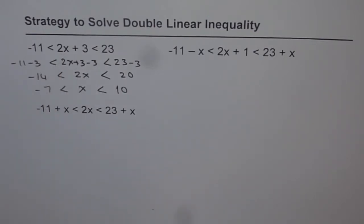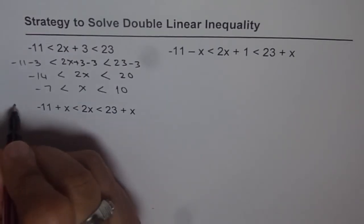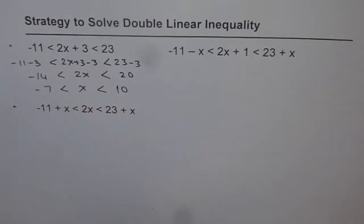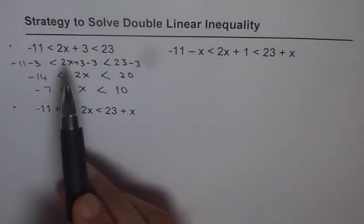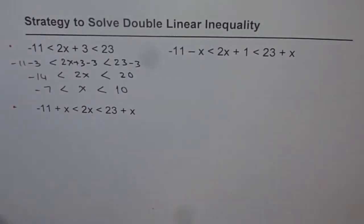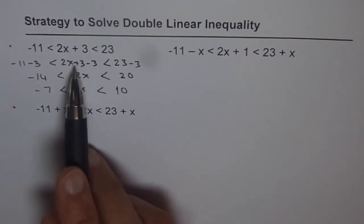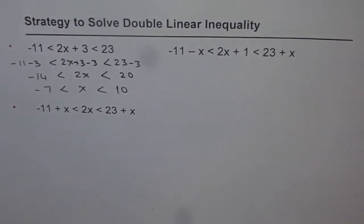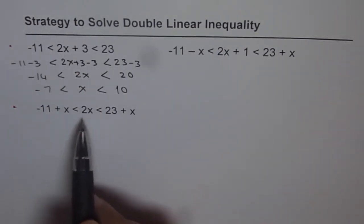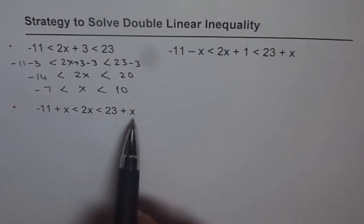Now let's solve the second kind of inequality. Here you'll observe that x is present in all three places. So we should get rid of that x. The strategy is to keep x in the center, as it was easier in the earlier case. So since x appears at three places, let's get rid of those x's.